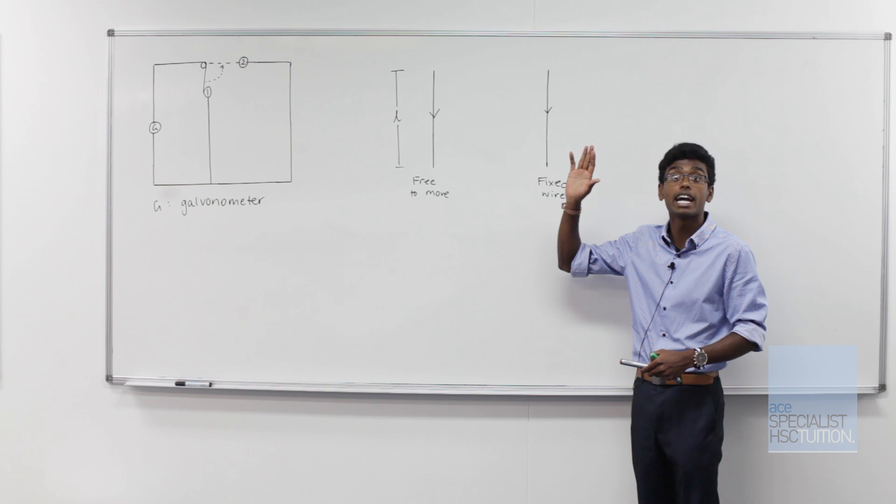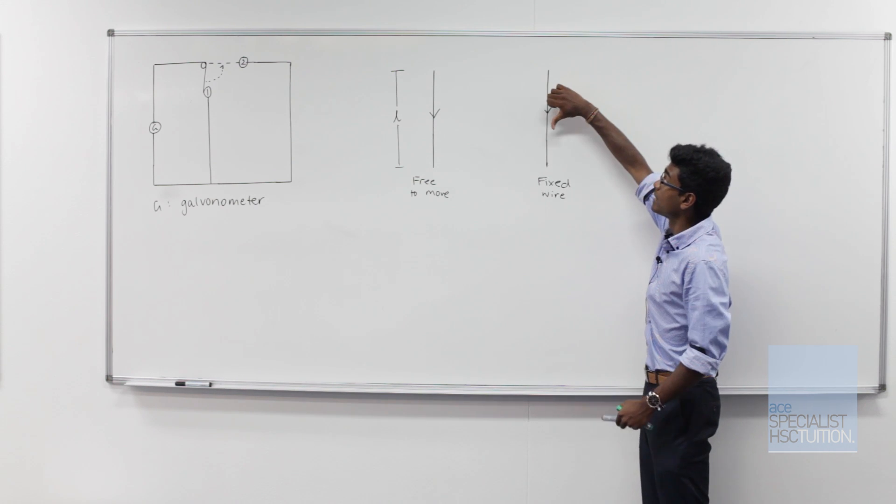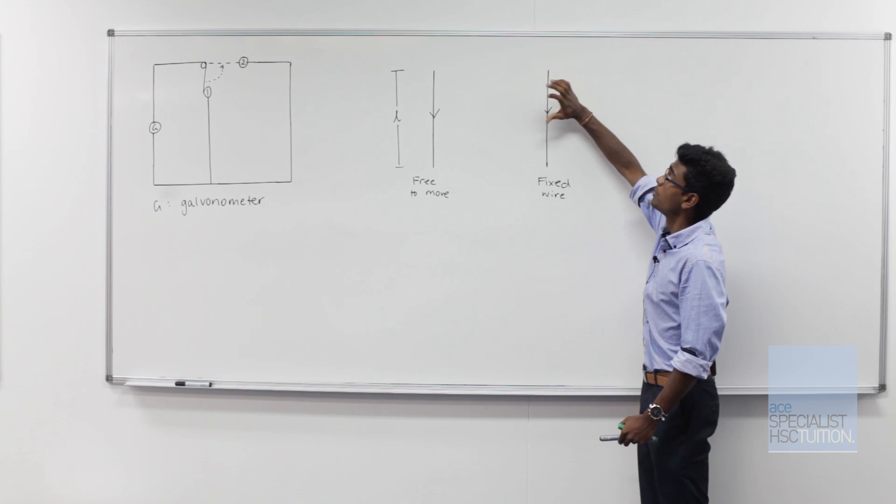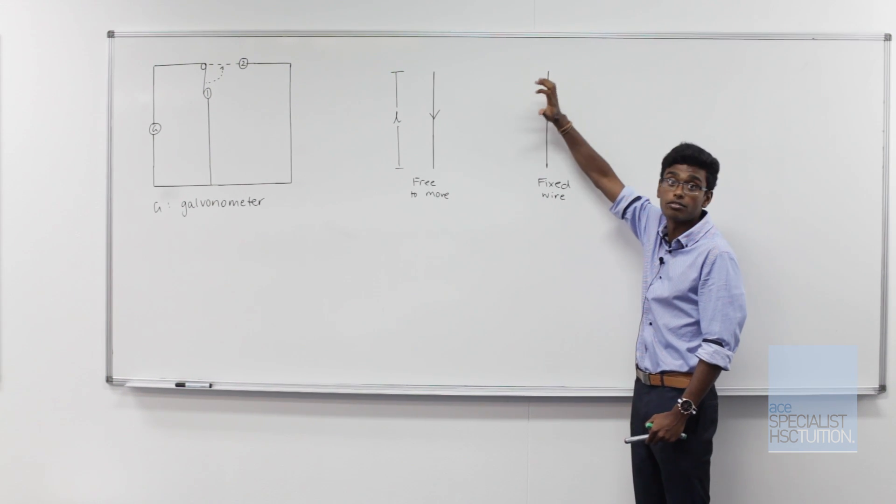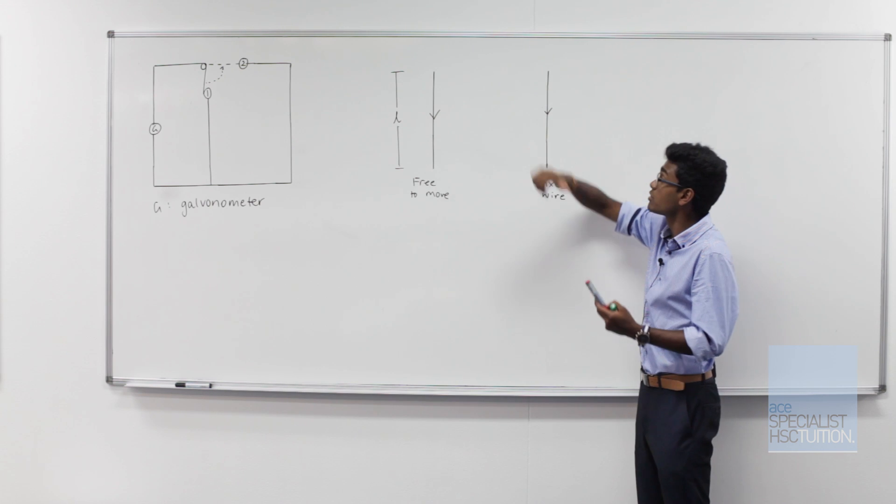I'm going to use the right hand grip rule, my thumb pointing in the direction of the current. We can see my fingers are going into the page on the side of the freely moving wire. So let's draw that in now.